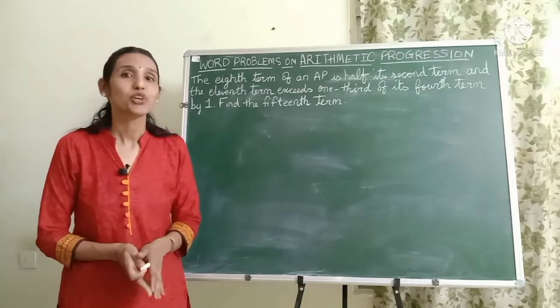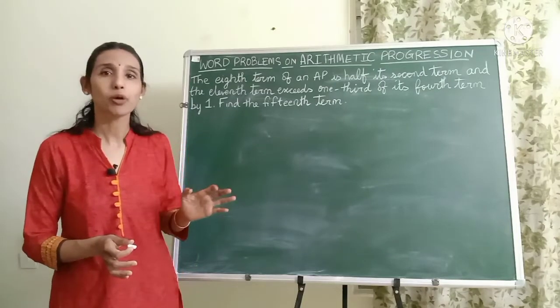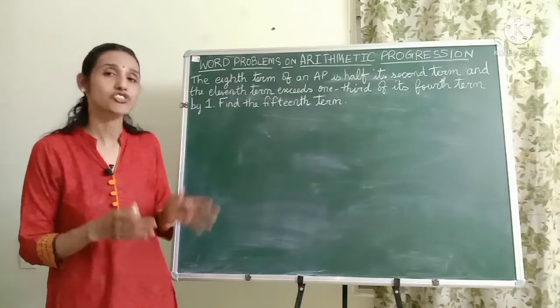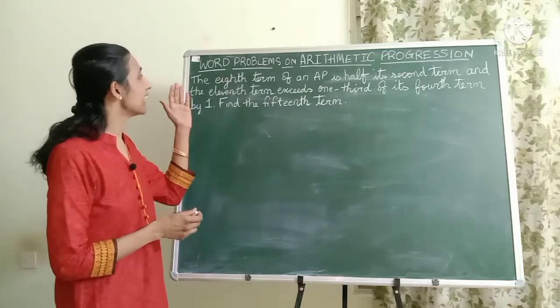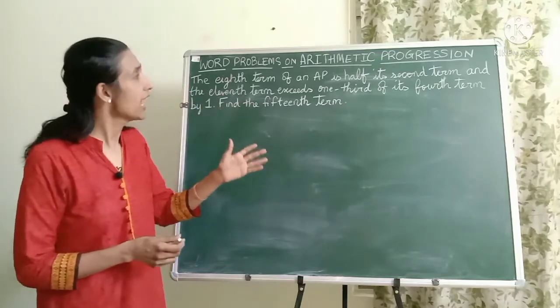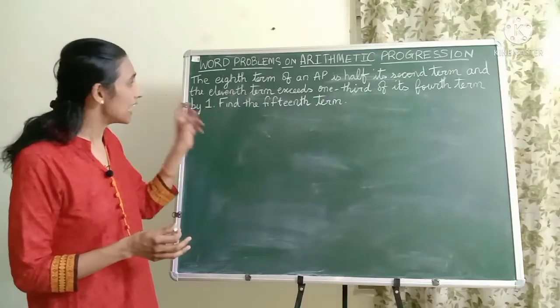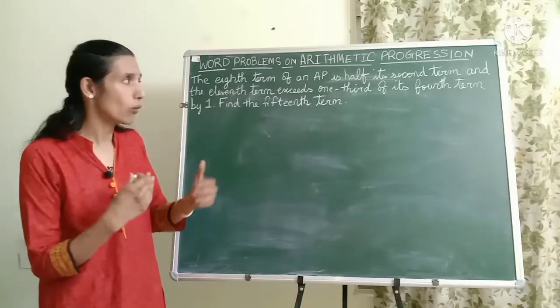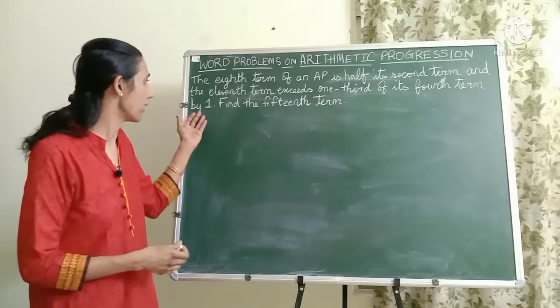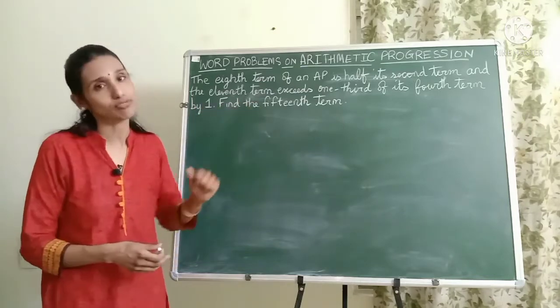Hello everyone. In today's video we are going to discuss a word problem based on arithmetic progression. So let's read the question. The 8th term of an AP is half its second term and the 11th term exceeds one third of its fourth term by one. We have to find the 15th term.